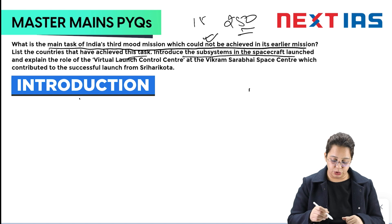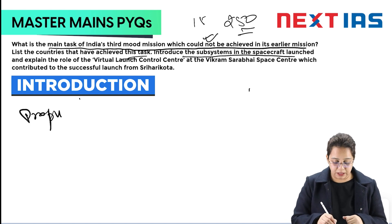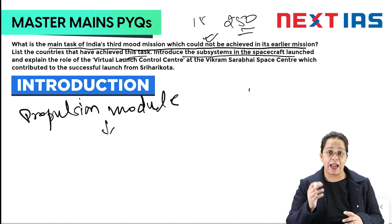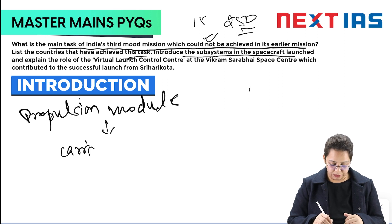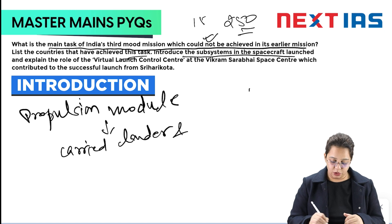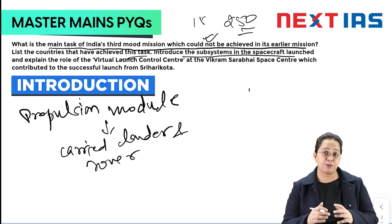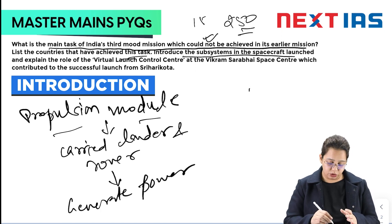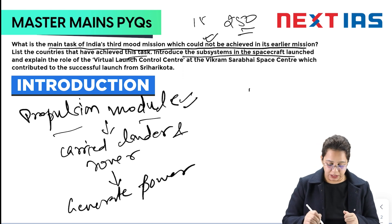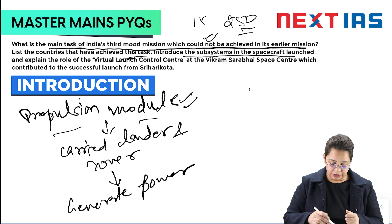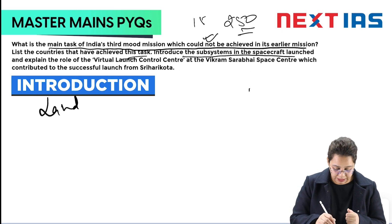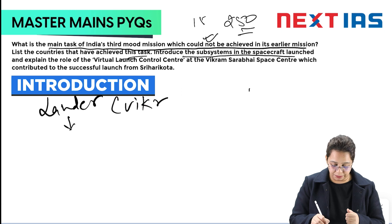Starting with the structural subsystems — the propulsion module: its work was to carry the lander and rover system together. The propulsion module generated power and provided power to the whole system. That was its broad function. Next in the structural part is the lander — the Vikram lander.